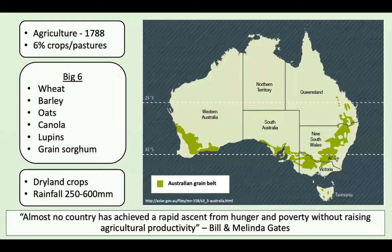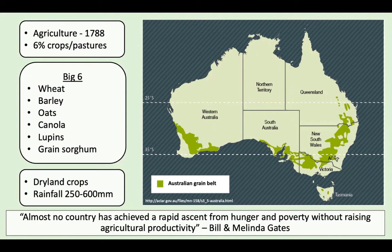In Australian grain crops: within Australia, agriculture as we know it began in 1788 with the arrival of the first European settlers. Only around 6% of the land is suitable for growing crops and pastures, and around a third is not suitable for any form of agriculture. I'm particularly interested in grain crops, and there are six major grain crops within this country, with wheat being one of Australia's major exports.